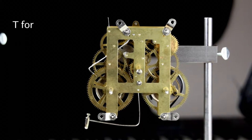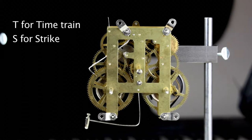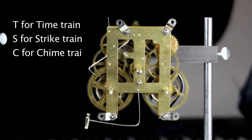To solve this problem, we put a T in front of the wheel number to indicate a wheel in the time train, an S for the strike train, and a C for the chime train.